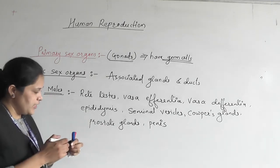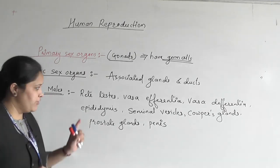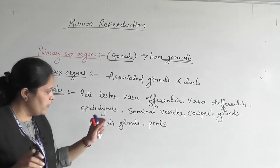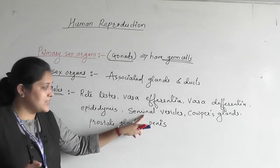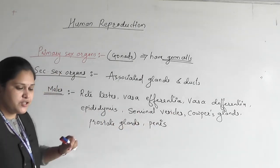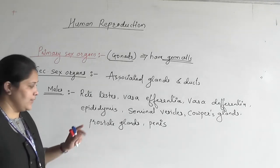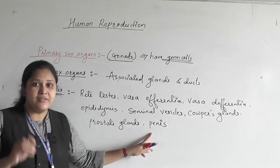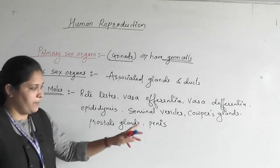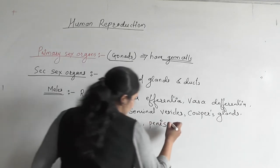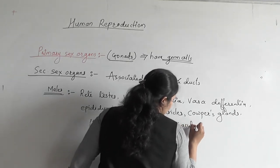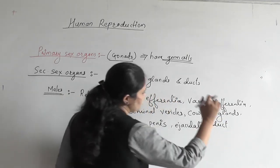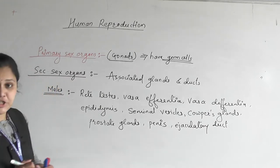In males, rete testis, vasa efferentia, vasa deferentia, and epididymis — all these are tubular structures. Plus three glands: seminal vesicles, Cowper's gland (also called bulbo-urethral gland), and prostate gland. Plus external genitalia — that is penis. Plus ejaculatory duct, which helps in deposition of semen or sperm.